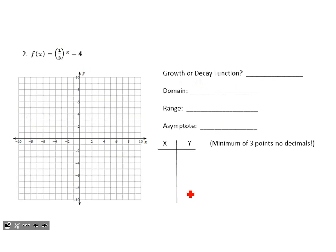The next function has a base of one-third, indicating the function is modeling decay — it will fall to the right, not rise. It's still an exponential function, so its domain is all real numbers. The vertical shift is down 4, so the horizontal asymptote is at y equals negative 4. The range will be all y values greater than negative 4. Exponential functions go above that asymptote unless there's a vertical flip, which we don't see here — so we can get through these very quickly.